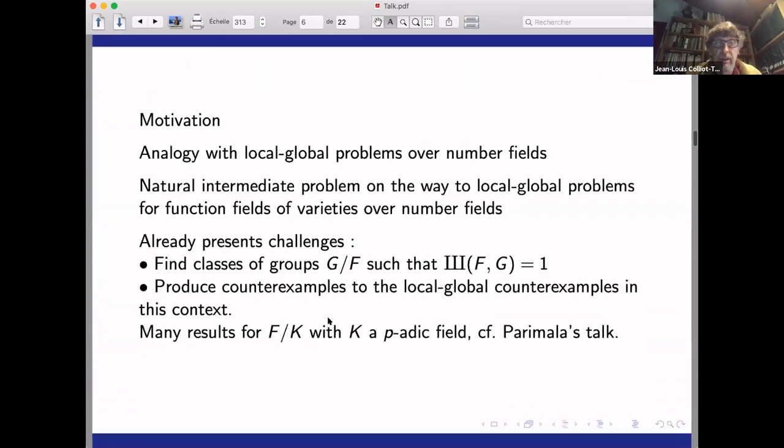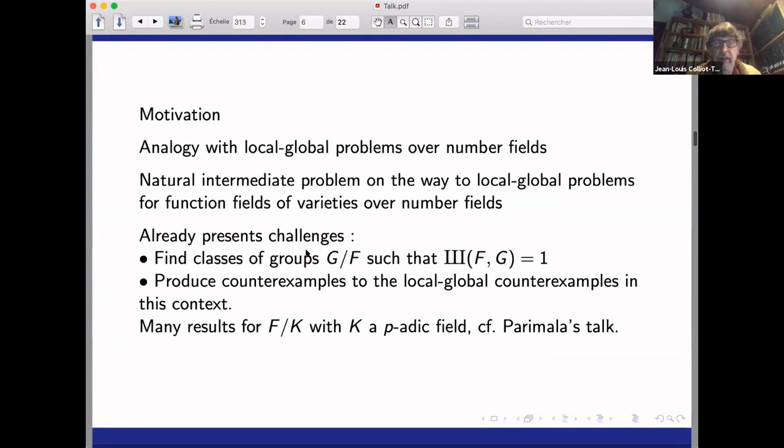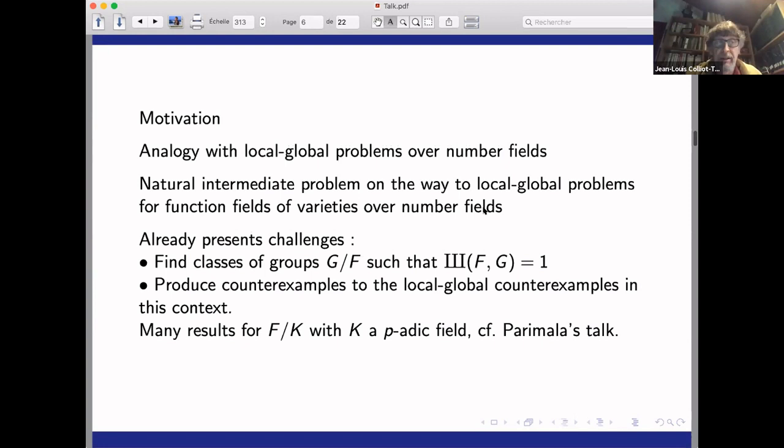What is the motivation? There is some analogy with local global problems over a number field, which you have heard of in Parimala's talk. Also, it's natural to ask why bother about the semi-global fields? Well, it's an intermediate problem on the way to local global problems for function fields of varieties over number fields. For instance, if you take a function field in one variable over a totally imaginary number field, one wonders whether a quadratic form in nine variables over such a field has a zero.